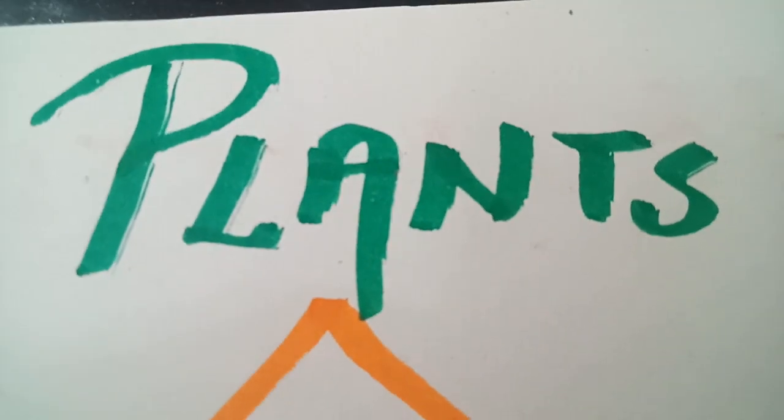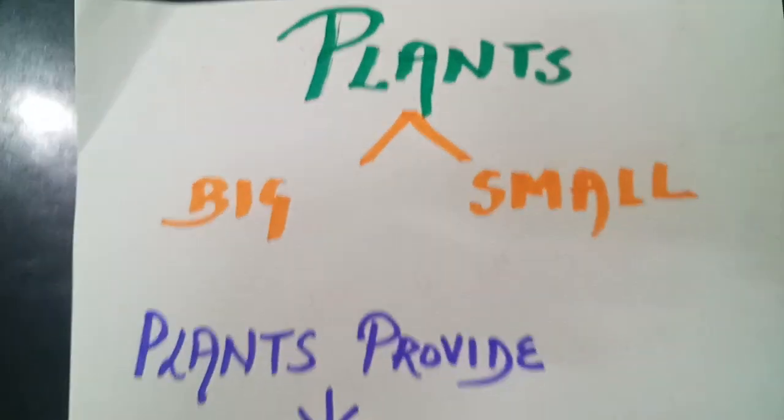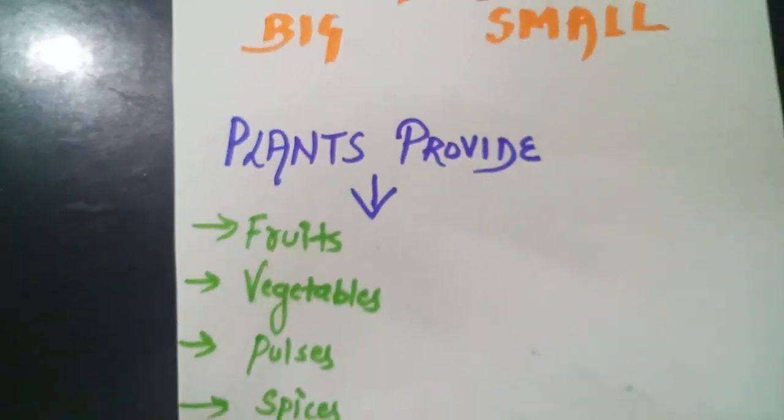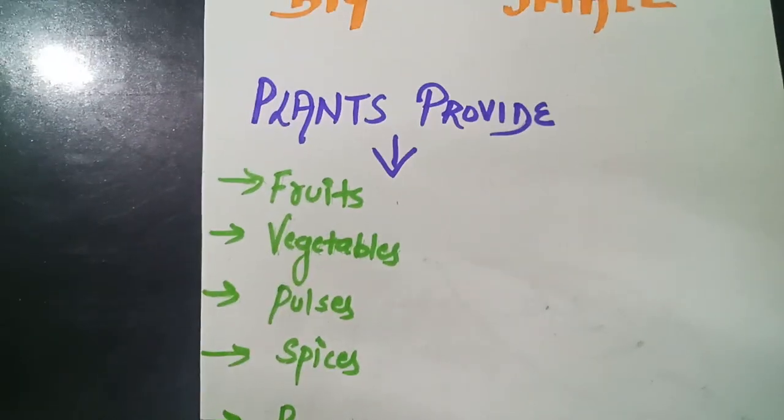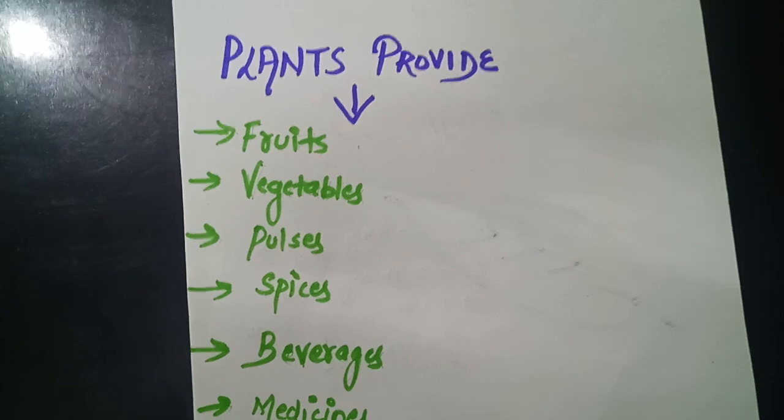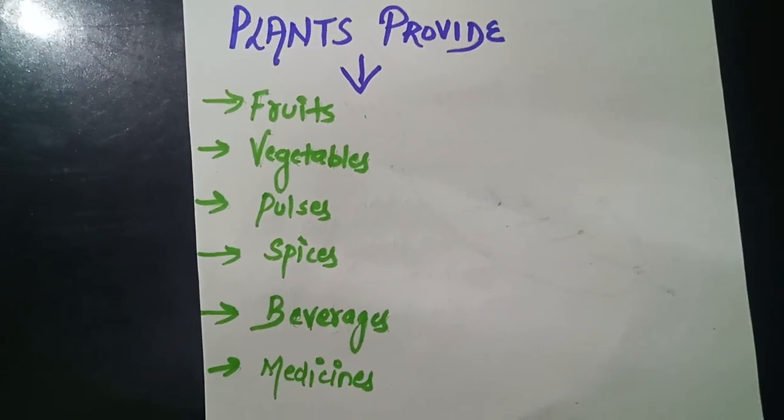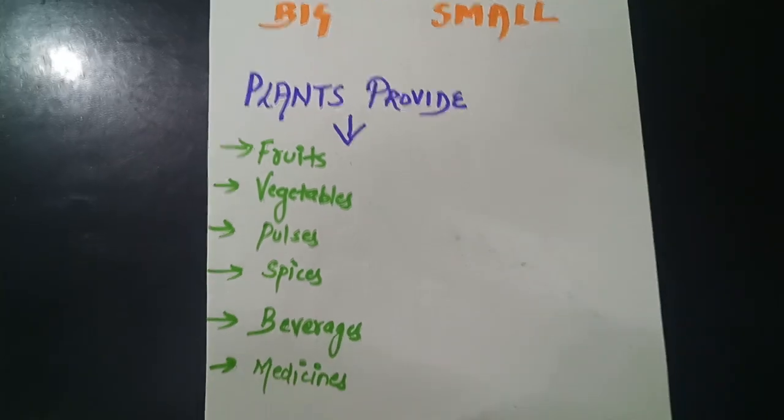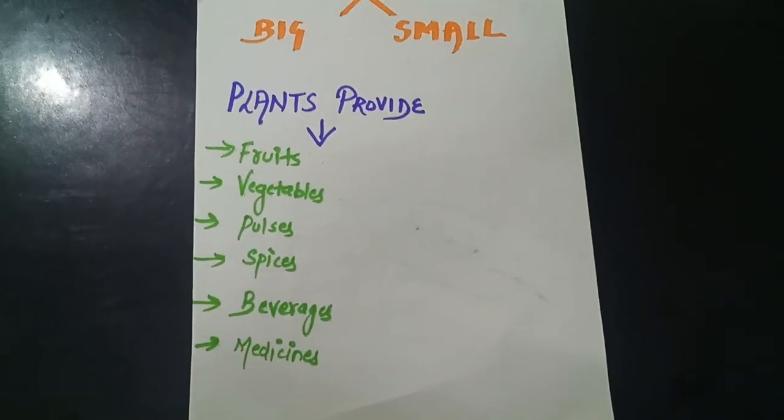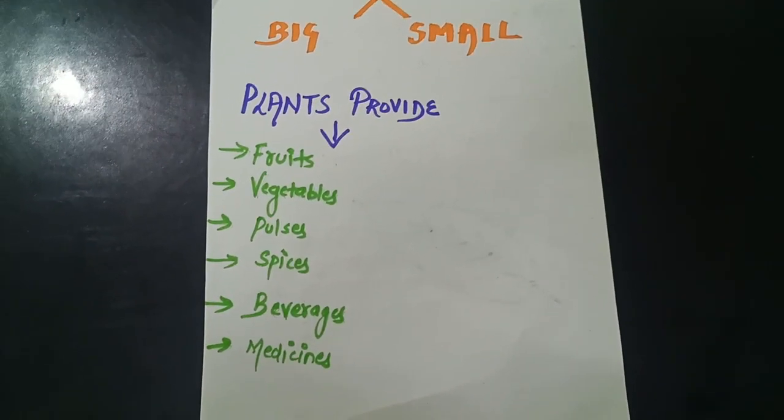They are known as plants and plants are really very essential as they are very useful for us. Plants provide us fruits, vegetables, pulses, spices, beverages and medicines. So plants are of great importance to each and every one of us.